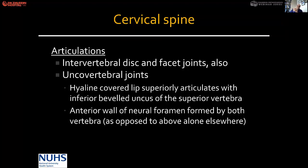Uncovertebral joints are covered with hyaline cartilage. The lip superiorly articulates with the inferior beveled uncus of the superior vertebra. The uncovertebral joint has important significance in bony nerve root compression. As we get older, compression can come from both the disco-ligamentous complex and also from hypertrophic uncovertebral joints.